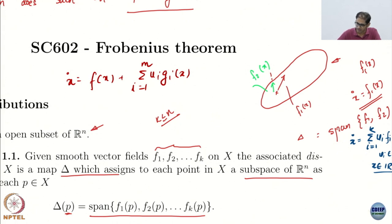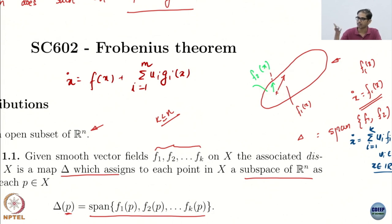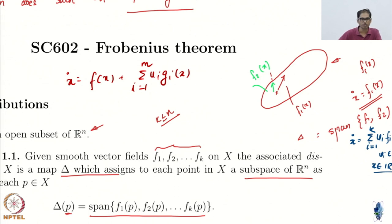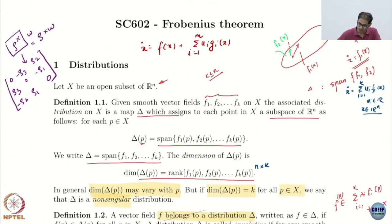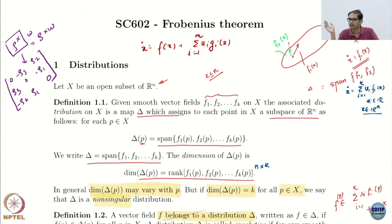Because these are linearly independent vectors, you get anything in this plane. In higher dimensions you may not get everything. A distribution is just a way of representing the span of these vector fields.